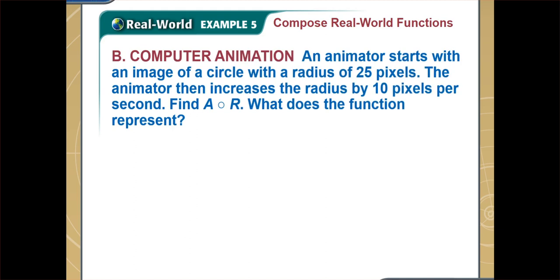Now we are asked to find the composition of a and r, and also what the composition of the two functions a and r represents. The function r helps us find the length of the radius at any given time t in seconds, and the function a helps us find the area of our circle for any given radius r.